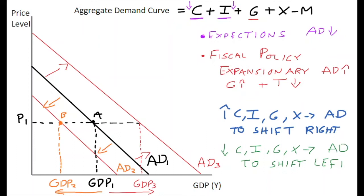So in this case here we are looking at two different types of aggregate demand curve shift, right and left, showing increases or decreases.